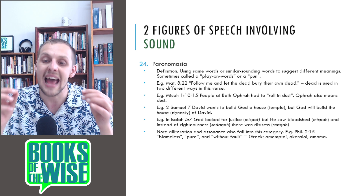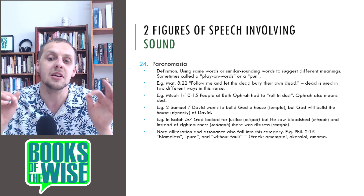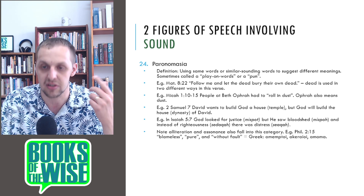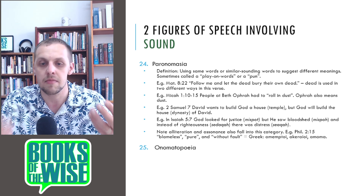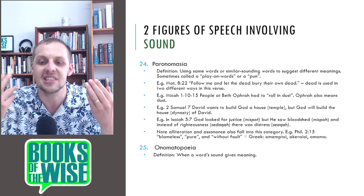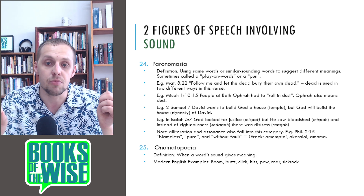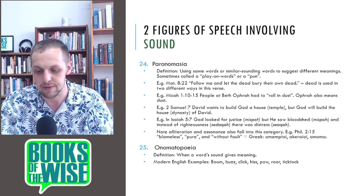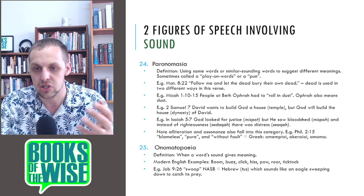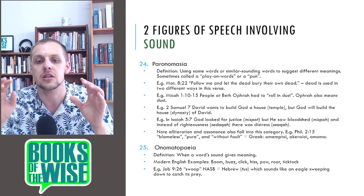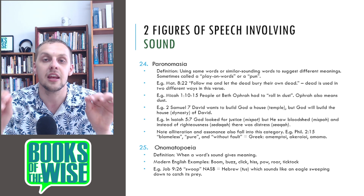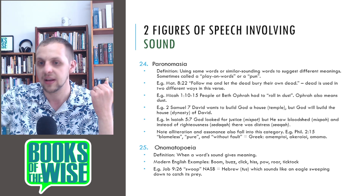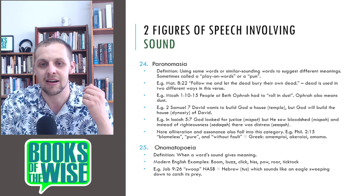Note that alliteration and assonance also fall into this category. For example, Philippians 2:15 in Greek: blameless, pure, and without fault — asemptoi, akera-oi, anoma — all three words start with the Greek alpha, showing assonance. The last figure of speech involving sound is onomatopoeia: when a word's sound gives meaning. Modern examples: boom, buzz, click, hiss, pow, roar, tick-tock — the word brings to your ears the sound it represents. In Job 9:26, the word translated swoop in NASB is in Hebrew tus, which sounds like an eagle sweeping down to catch its prey.